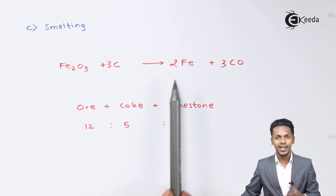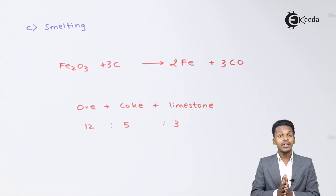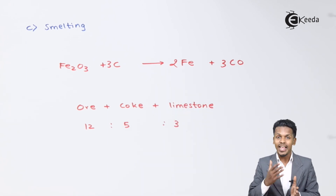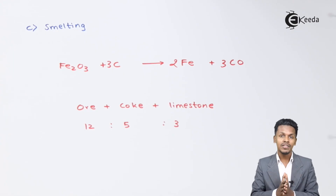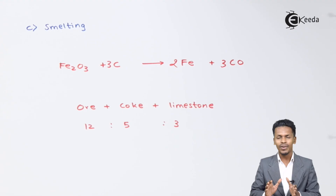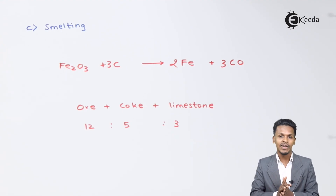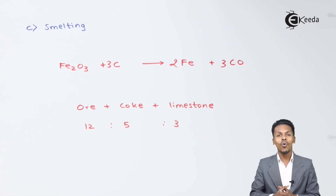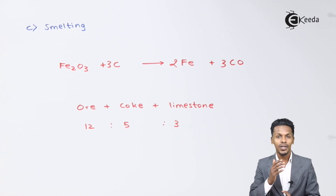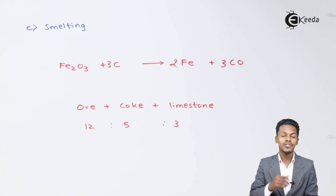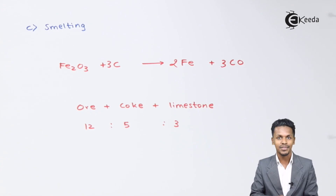The crude metal obtained is cast iron. The reactions that take place at various regions in the blast furnace will be discussed in the next topic. For now, it is sufficient to understand how hematite is converted into crude iron. Thank you for watching — I hope you understood this video clearly. Don't forget to subscribe.